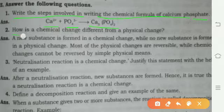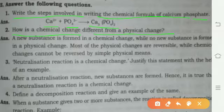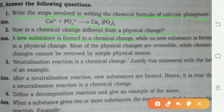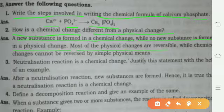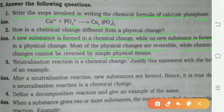How is a chemical change different from a physical change? A new substance is formed in a chemical change. Chemical changes cannot be reversed by simple physical means. Most of the physical changes are reversible, while chemical changes cannot be reversed.